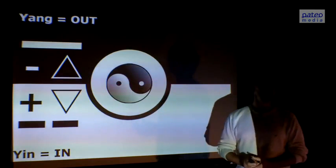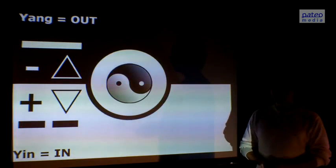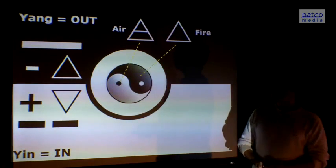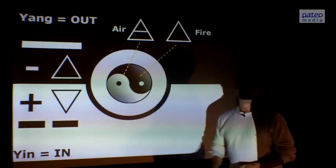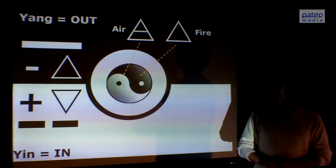An unbroken line is the yang energy, the male energy, and a broken line is the female energy, the yin energy. Now what we see in this symbol, we see that the black dot is the inner energy of the male, the inner male energy, so it's air.